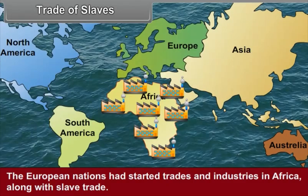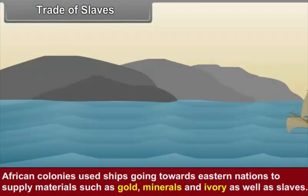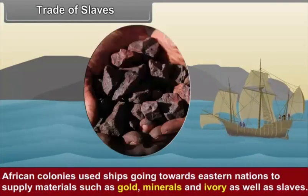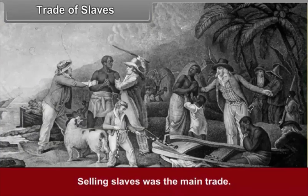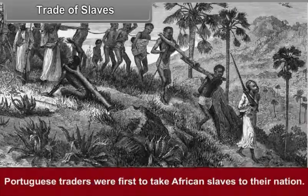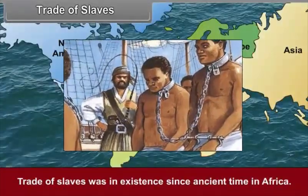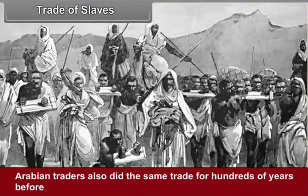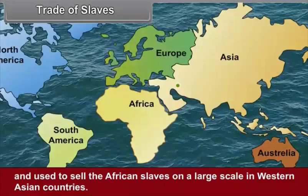Trade of Slaves: The European nations had started trades and industries in Africa along with slave trade. African colonies used ships going towards eastern nations to supply materials such as gold, minerals and ivory as well as slaves. Selling slaves was the main trade. Portuguese traders were first to take African slaves to their nation. Trade of slaves was in existence since ancient times in Africa. Arabian traders also did the same trade for hundreds of years and used to sell African slaves on a large scale in western Asian countries.